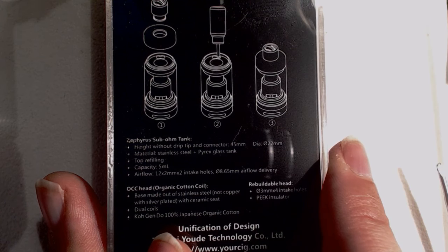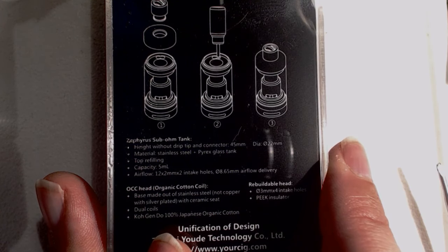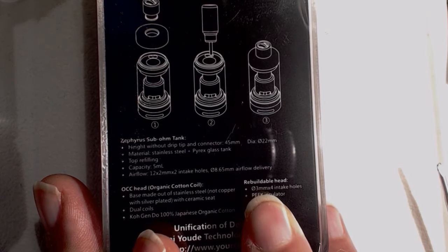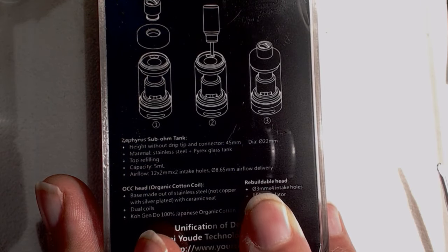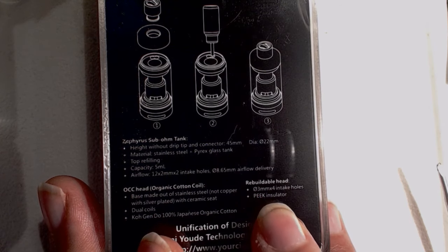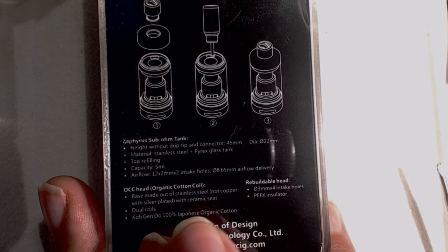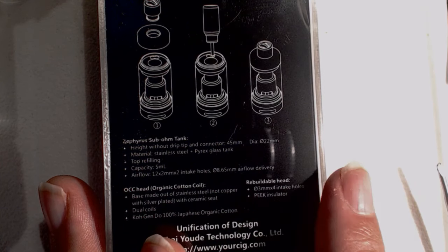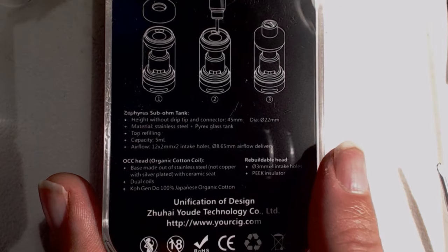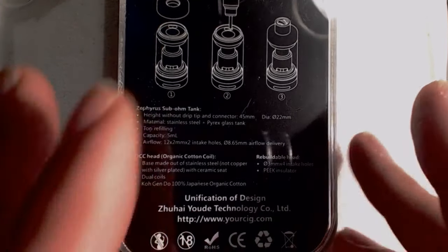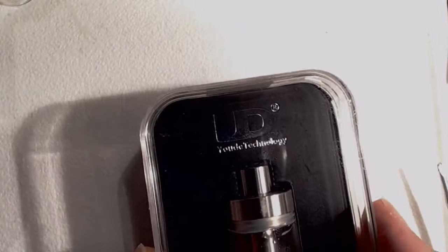There we go, it's Kogendo 100% Japanese organic cotton, dual coils, rebuildable head. Specs there, so it's 4.3mm diameter intake holes, PEEK insulator, base is made out of stainless steel, not copper, with silver plated, with ceramic seat. So unification of design, I presume that's what UD means, now we know. Okay, enough of that.